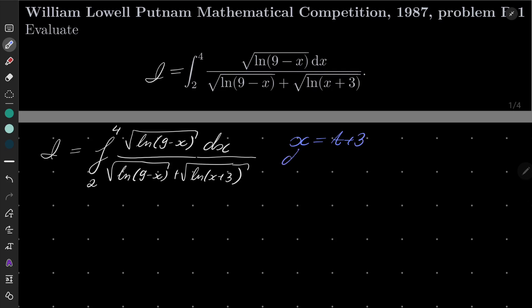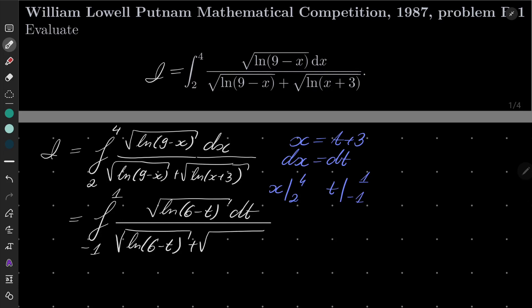Why? Well, let's see. dx becomes just dt, and now x was from 2 to 4, which means that t equals x minus 3, so 2 minus 3 is minus 1 and 4 minus 3 is plus 1. So now our integral becomes integral from minus 1 to 1 of the square root of natural log of 6 minus t, and in the denominator we have natural log of 6 minus t plus natural log of 6 plus t.